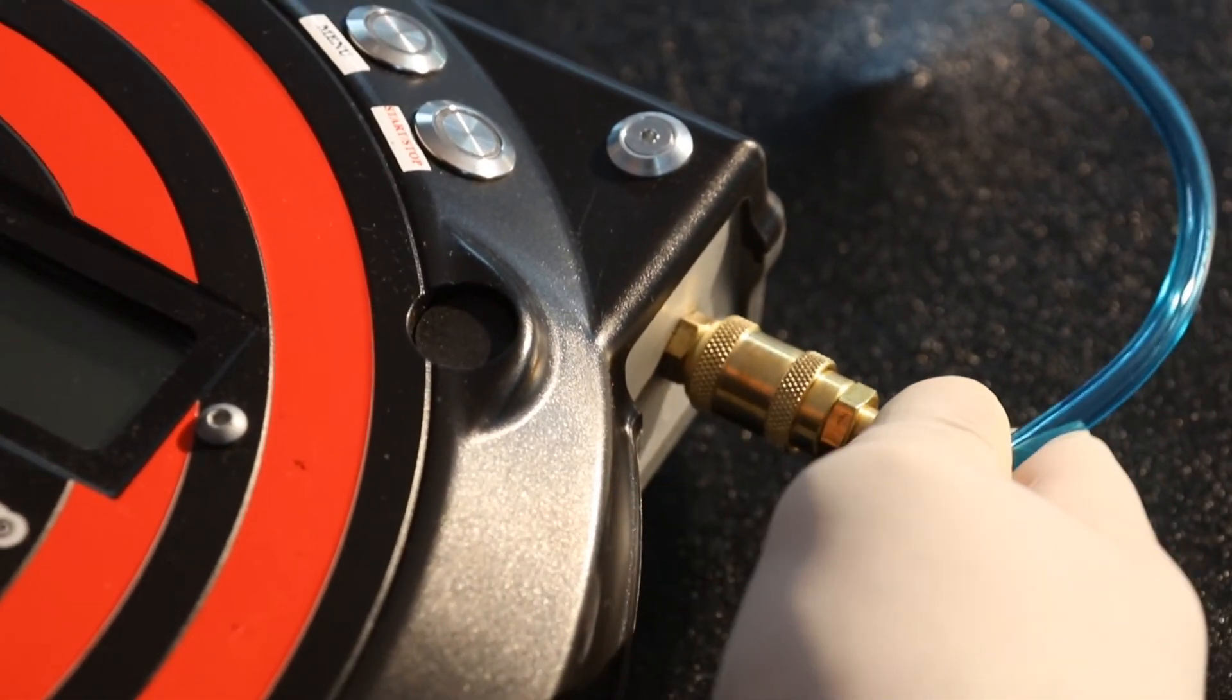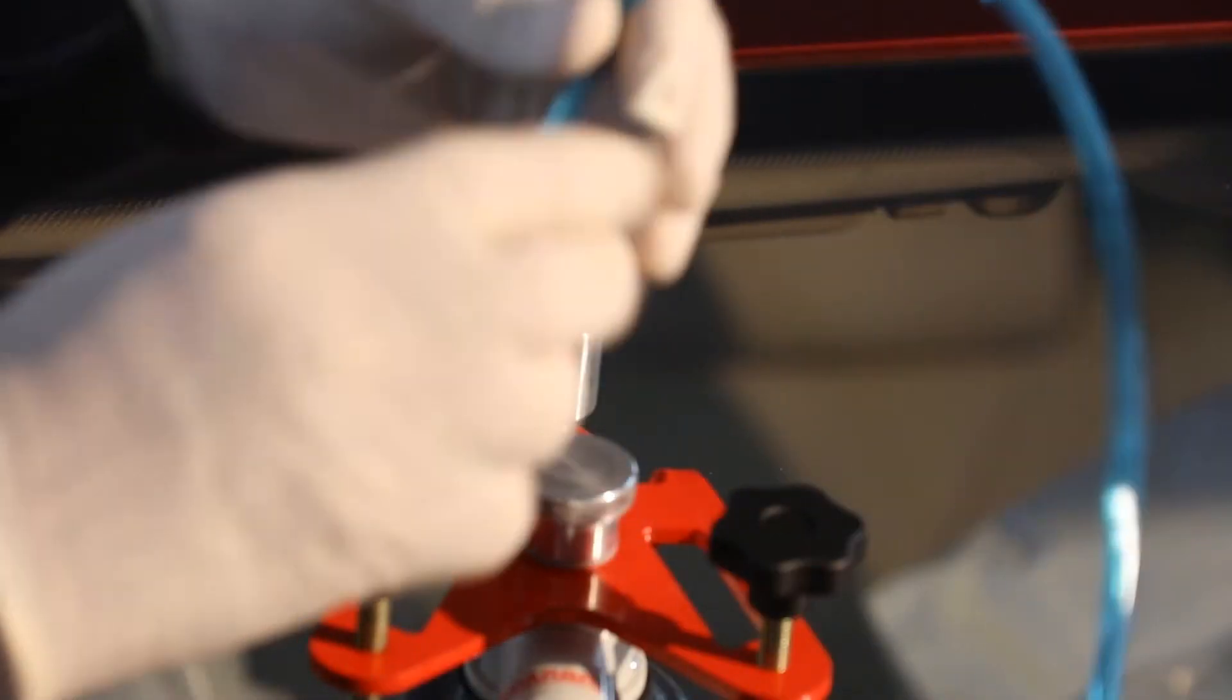Connect the hose with its brass collar coupler on the machine, then the metal collar coupler on the injector.